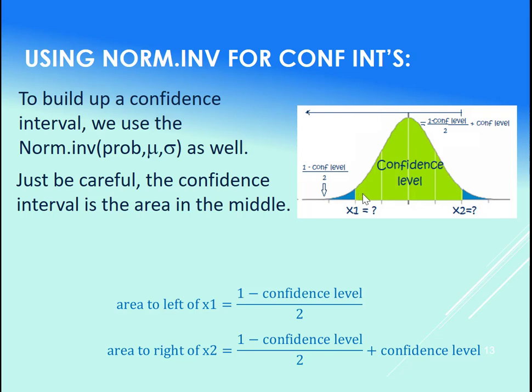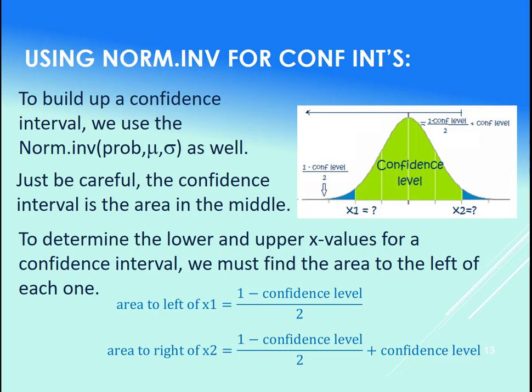Be so careful that the area in the middle here. So if we want to determine the lower and upper x values here, here are our formulas. The x lower, or the x1, the area to the left of it is what we need to plug into the NORM.INV. That is 1 minus the confidence level divided by 2. Now, this guy, area to the left of it, will be this blue area right here, plus the whole confidence interval. So take what we found here, add to it the confidence level, and that will give us the area to the left of it.